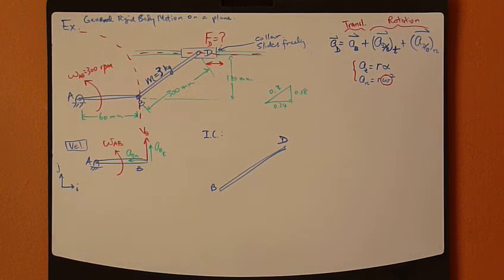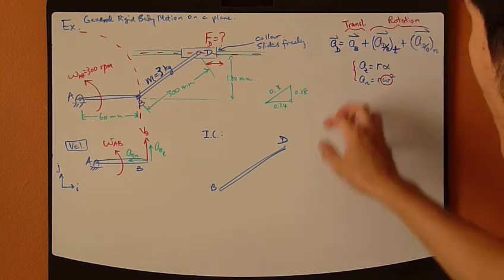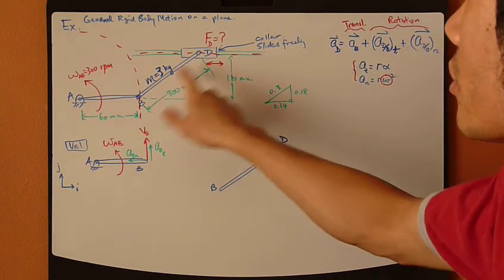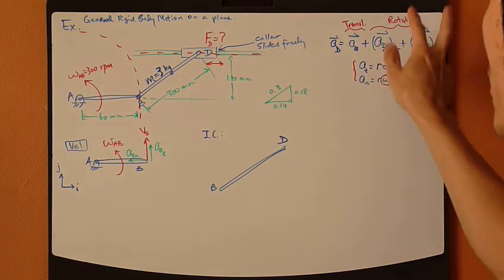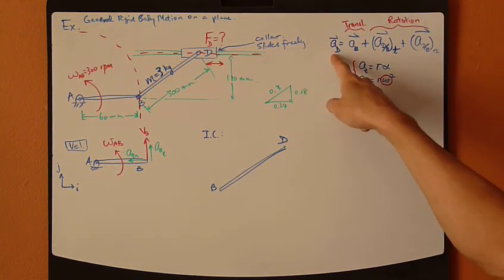So now, the kinematics part. Let's look at the equation for acceleration. We can split this general rigid body motion into translation and rotational proportions and apply it to point D.